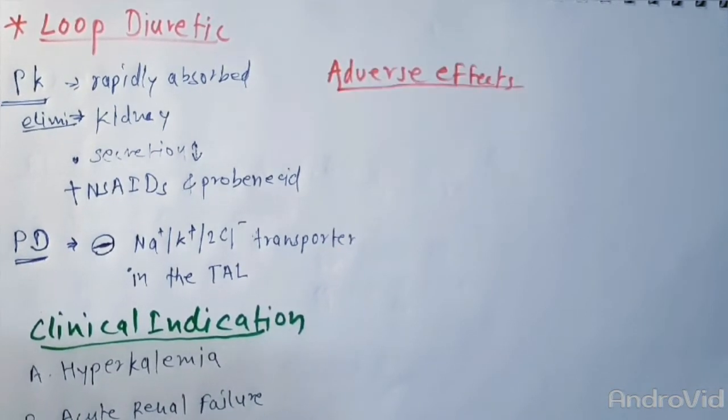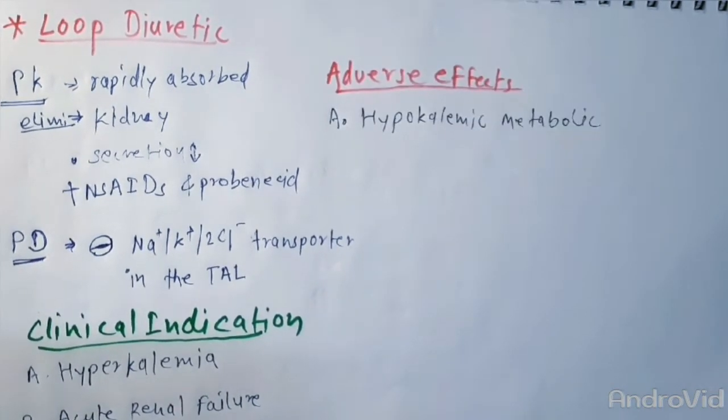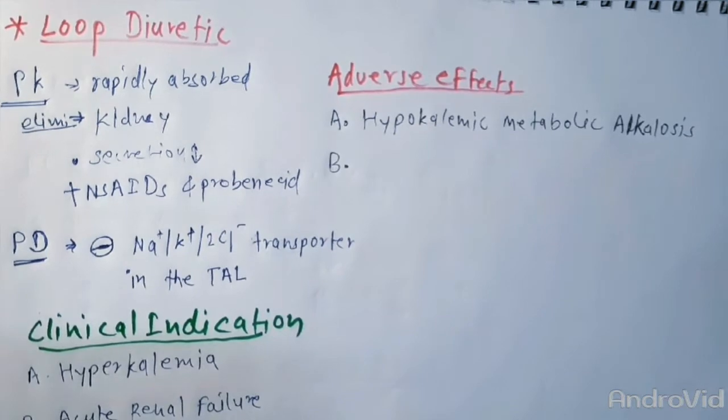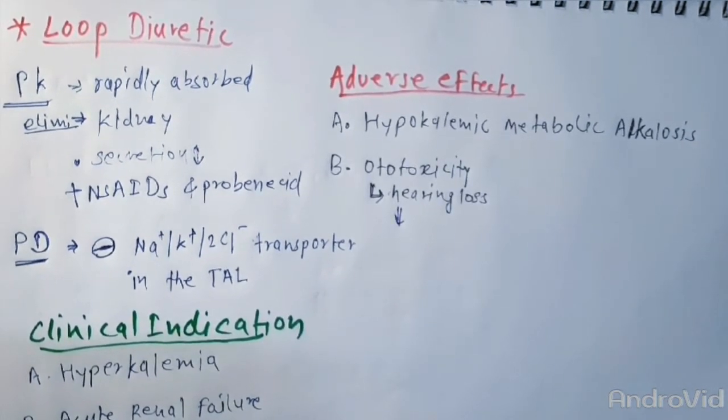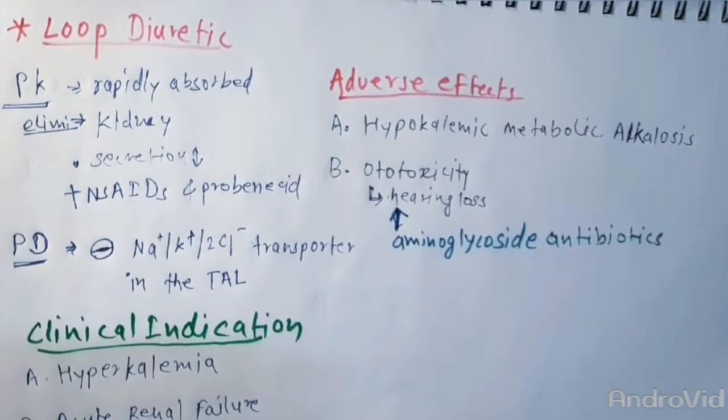Talking about their adverse effects, loop diuretics can cause hypokalemic metabolic alkalosis. They can also cause ototoxicity, which means hearing loss. This ototoxicity can also be caused by aminoglycoside antibiotics.